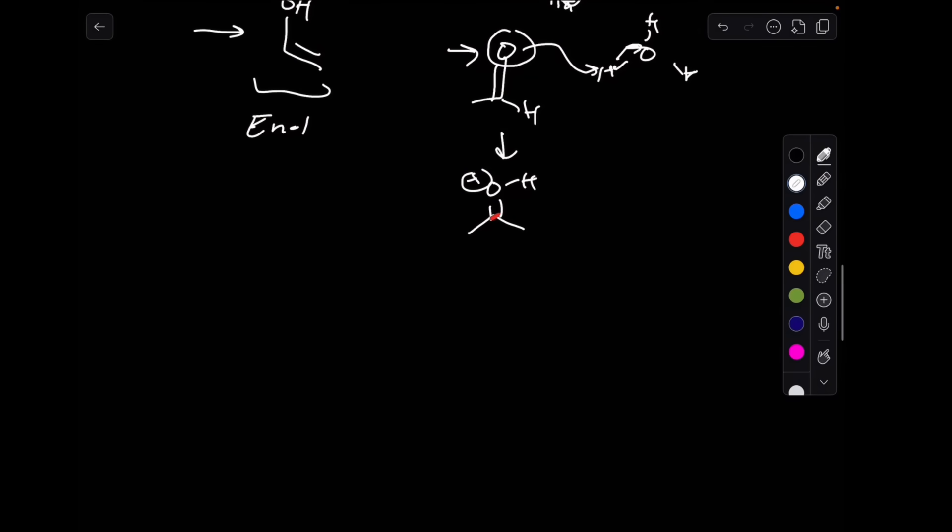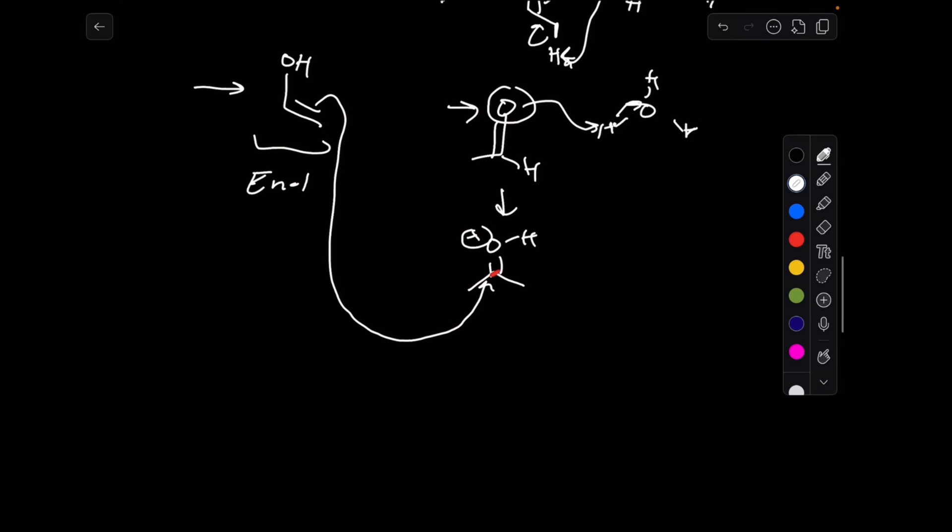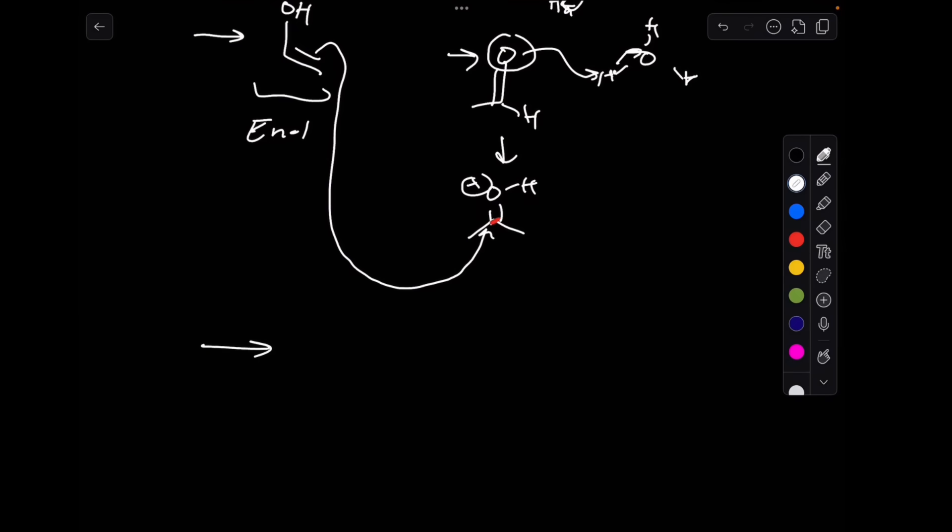That's why you have to protonate the second aldehyde. Now that it's protonated, we can do this in a single step using the double bond electrons and we can make our structure, so we have four carbons.